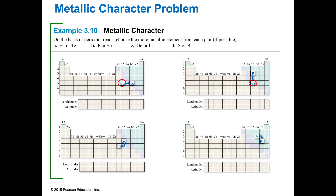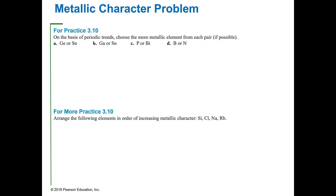Between germanium or indium, indium is lefter and lower, so indium is more metallic. Between sulfur and bromine you can't tell — they're on the same diagonal. I always include one like that so you know it's okay if you can't figure it out. That covers metallic character, and I've given you some practice problems for it.